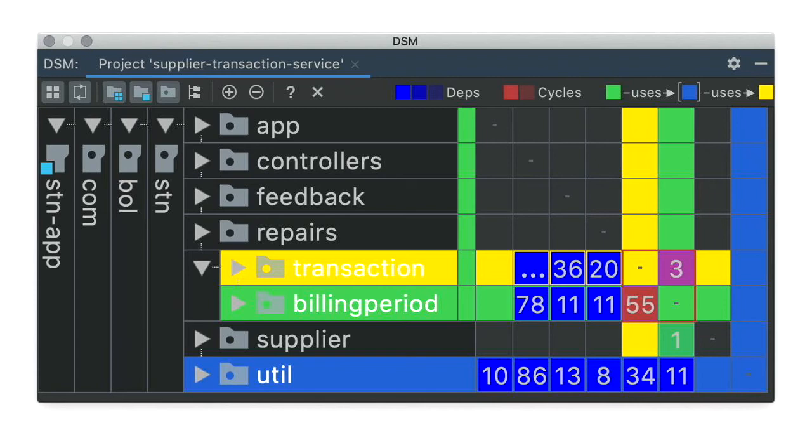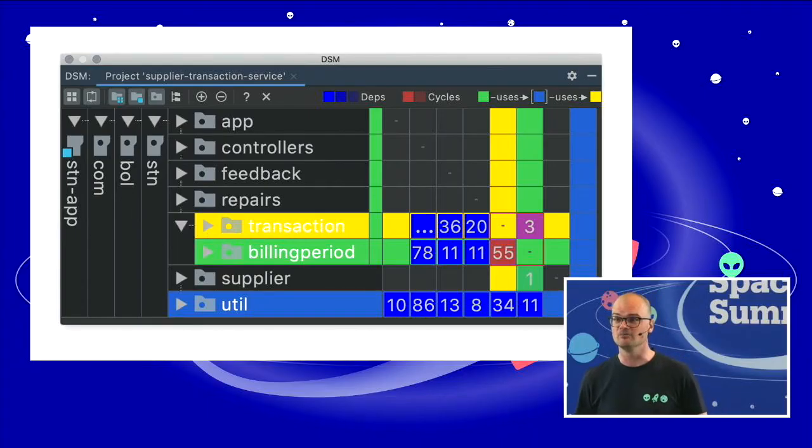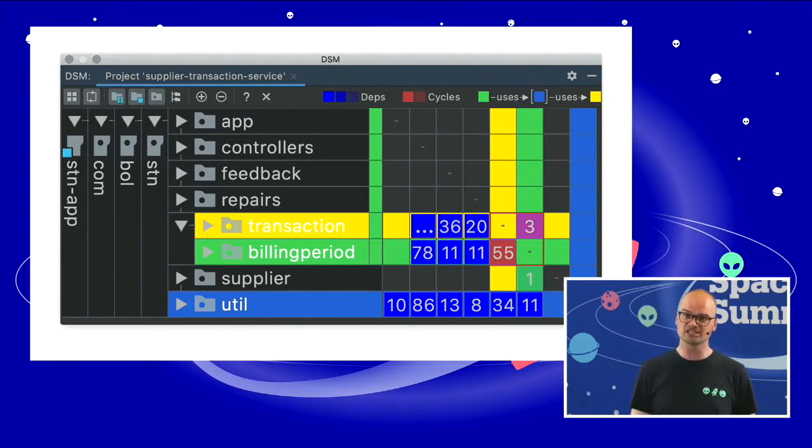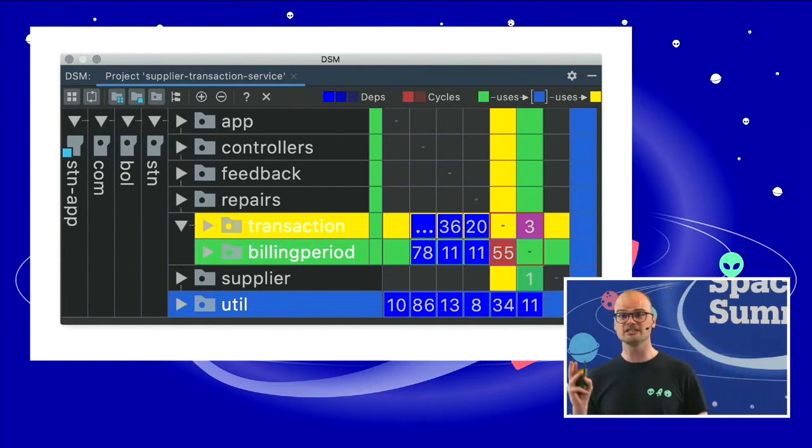This is an example where we actually introduced a cycle by design. If you look at the transaction and billing period in yellow and green, you can actually see that a billing period uses transactions. And transaction uses billing periods as well. Well, I said I can't help you in telling you how to solve this thing. I can give you some pointers on where you should solve it. Because if you look at billing period, you can see it's using transactions 55 times.